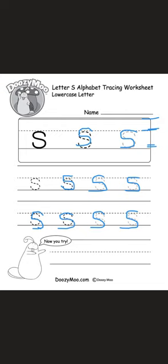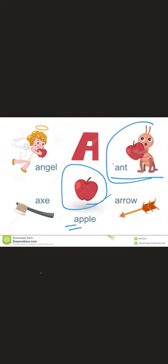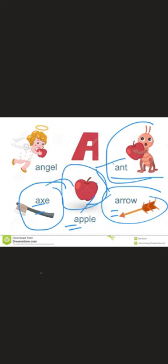The second sound this week is the /a/ sound — 'a, a, a'. Here are some words that begin with the /a/ sound: ant, apple, arrow, and axe. This is the letter 'a' that makes the /a/ sound. Here is how we write the letter 'a', starting again from the middle line.